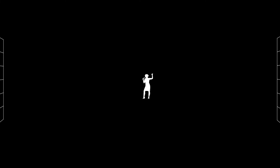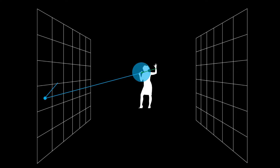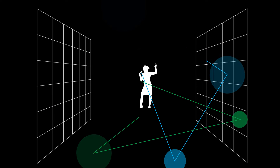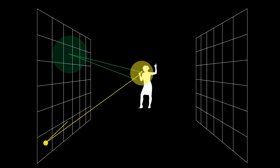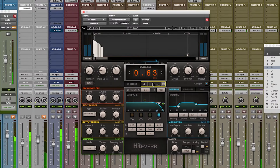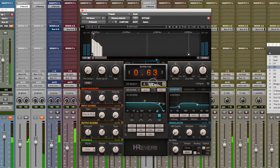A reverb is created when a sound is reflected from the surfaces of the objects around you — walls, furniture, whatever — causing a large number of reflections to build up and then decay. Although you don't have to be in an actual room to create reverb effects. You can also create artificial reverbs using springs, plates and, very commonly, digital processing.